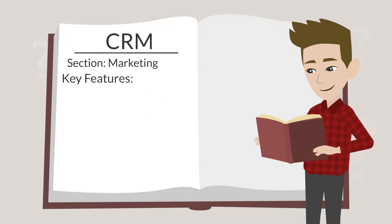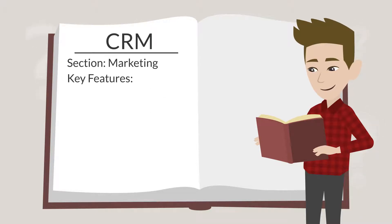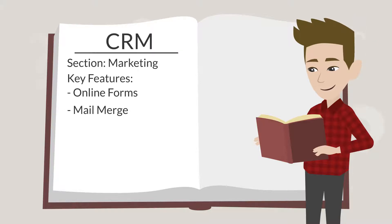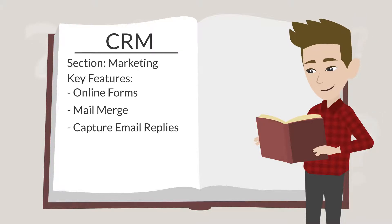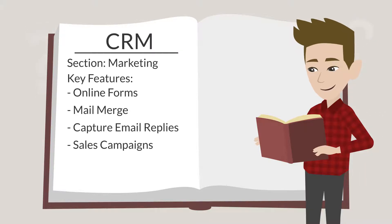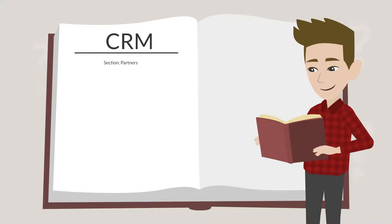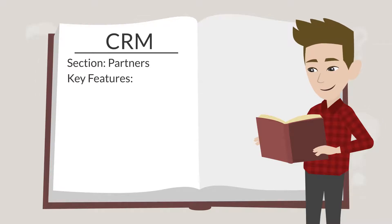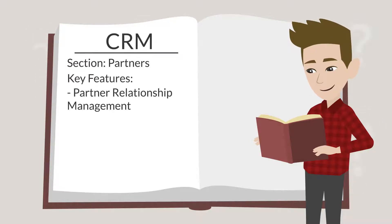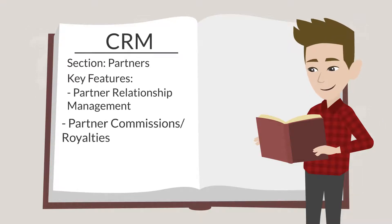The Sales section includes features that cover every aspect of the sales process, from opportunities and lead conversion to advanced forecasting. While the Marketing section supports all your marketing endeavors through features like Online Forms, Mail Merge, Capture Email Replies, and Sales Campaigns. Finally, the Partners section contains key features like Partner Relationship Management, Partner Commissions and Royalties, and Multi-Partner Management.